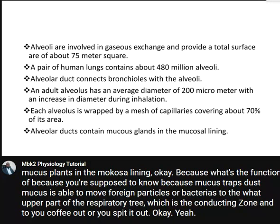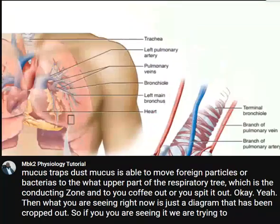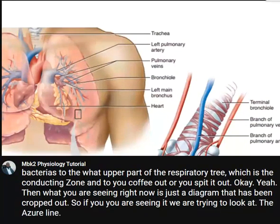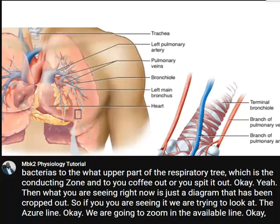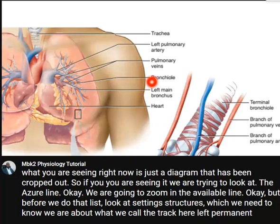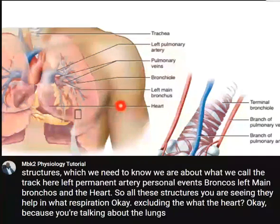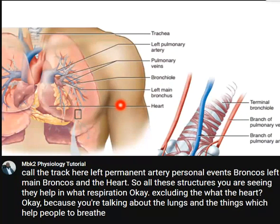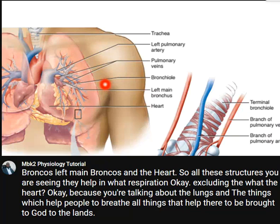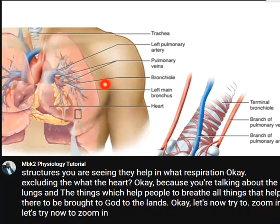What you are seeing right now is a diagram that has been cropped out. We are going to zoom in on the alveoli, but before we do that, let's look at certain structures we need to know. We have the trachea, left pulmonary artery, pulmonary veins, left main bronchus, and the heart. All these structures help with respiration, excluding the heart, and they bring air to the lungs.